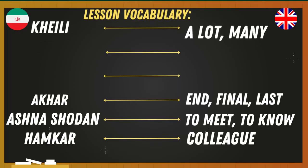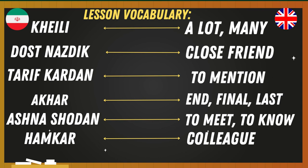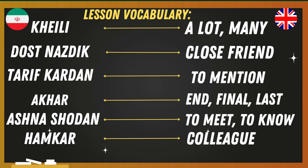Lesson vocabulary. A lot, many. Close friend. Tarif galvan — to mention, to tell about something. Aahkar — final, last.